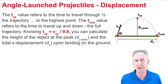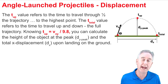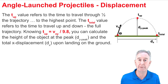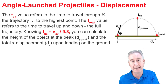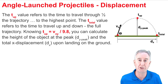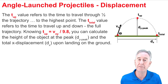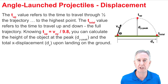For angled launch projectiles, the time up refers to the time to travel through half of the trajectory, and the total time refers to the time to travel up to that highest point and back down to the original starting height. Knowing that the time up equals v original y divided by 9.8, we can calculate two important displacement values.